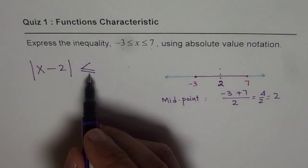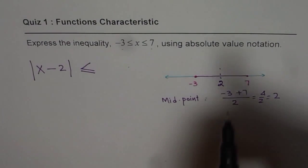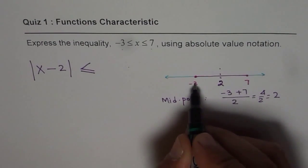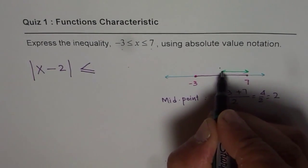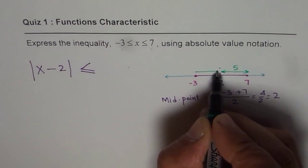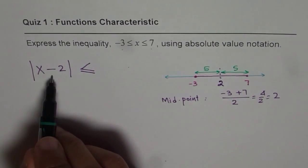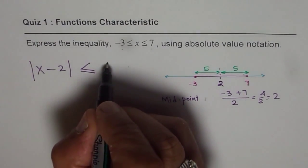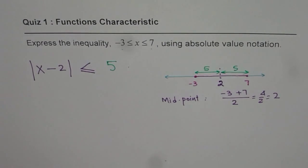Now less than or equal to how much? That is what we have to find. How far is the center from the extremes? 7 - 2 is 5. And you can check: between -3 and 2 is also 5. So the absolute value of x - 2 should be less than or equal to 5 units. That gives you the answer: |x - 2| ≤ 5.